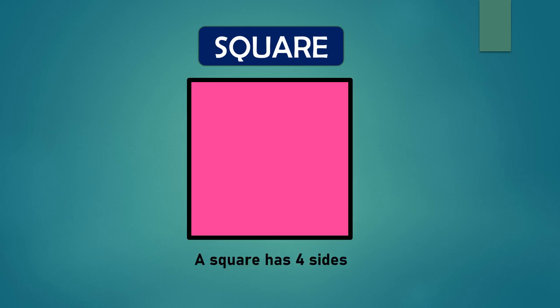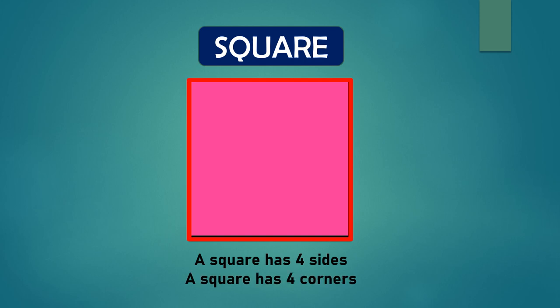For the first example, a square. A square has four sides: one, two, three, four. It also has four corners: one, two, three, four.